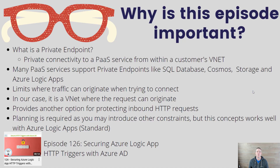So let's talk a little bit about why this content is important. You might be asking yourself, what is a private endpoint? Simply put, a private endpoint allows for connectivity to a PaaS service from within a customer's VNet. For example, when you have Logic Apps, you have a trigger that by default is exposed over the public internet. Some customers want to protect that endpoint to ensure that traffic being sent to that specific Logic App is occurring through the VNet that they may have other services deployed into.